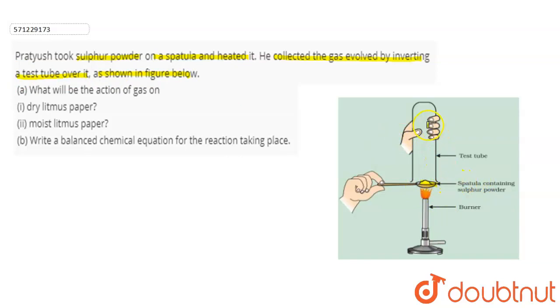After that he collected the gas evolved by inverting a test tube over it. So what will be the action of gas on dry litmus paper, moist litmus paper, and also write a balanced chemical equation for the reaction taking place?